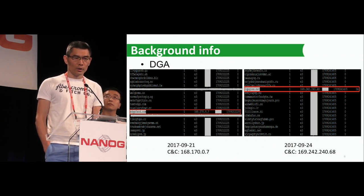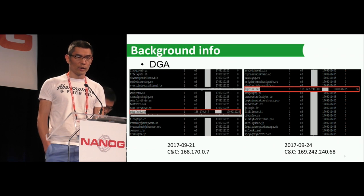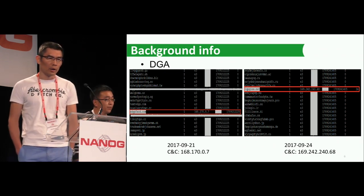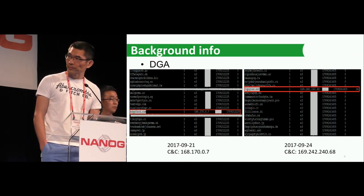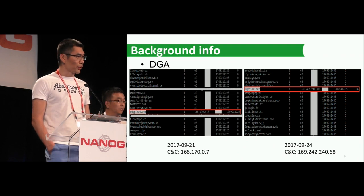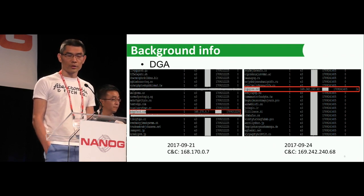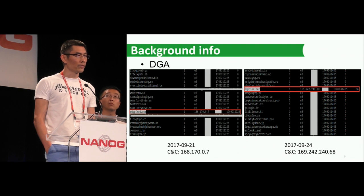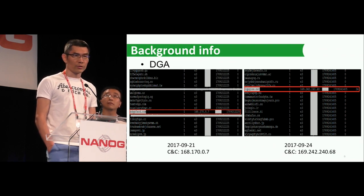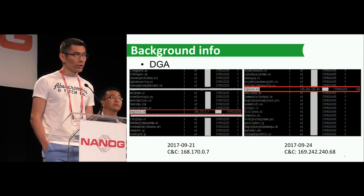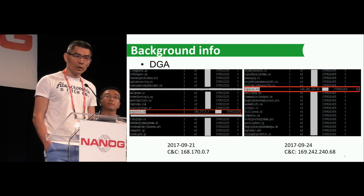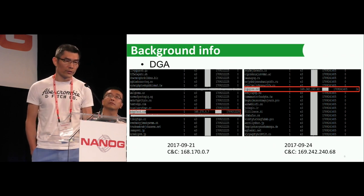Also, if you look at the TLD, you will see that the TLD is all over the place. For example, we have .ga, .biz, .tw, .us, .ru, .jp, .io. So if you're a security researcher and you want to register and sinkhole all these domains, it's going to be really difficult because you have to talk with DNS registrars all over the world and also pay a lot of money. Remember, this botnet will generate 2,048 domains every three days.